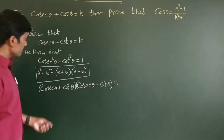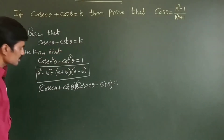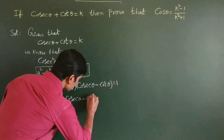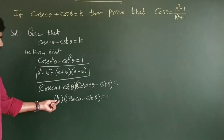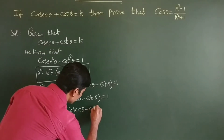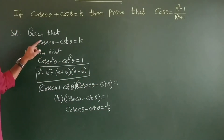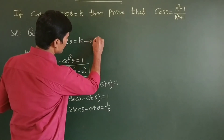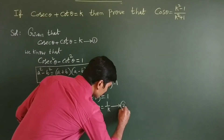This equals 1. In the place of cosecant theta plus cot theta, the given value is k, so substitute k: k into cosecant theta minus cot theta is equal to 1. Sending k to that side, it will be cosecant theta minus cot theta is equal to 1 by k. Take cosecant theta plus cot theta equal to k as equation 1, and cosecant theta minus cot theta equal to 1 by k as equation 2.